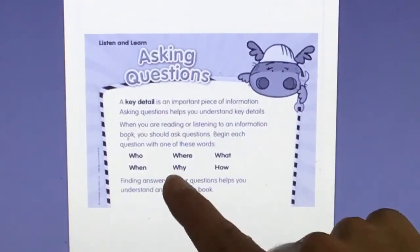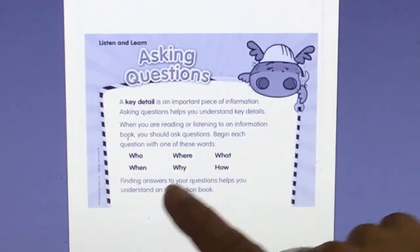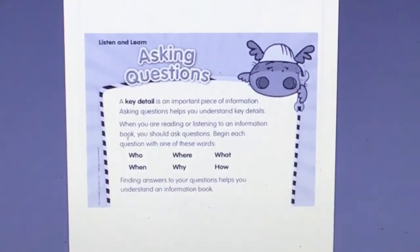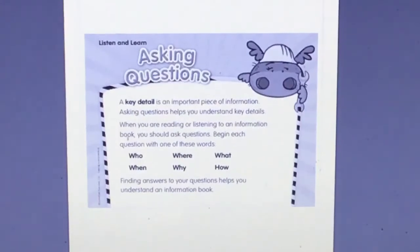Begin each question with one of these words: Who, where, what, when, why, how. Finding answers to your questions helps you understand an information book.